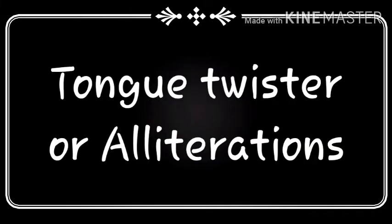First, let us take the tongue twister. It is there in English and in your own language also. They are the repetition of some sounds in a sentence. They are also called alliteration — both are the same. I will tell you some sentences which are tongue twisters. Example: 'She sells seashells by the seashore.' Second: 'A black bug bit a big black bear.' Third: 'Peter Piper picked a peck of pickled peppers.'